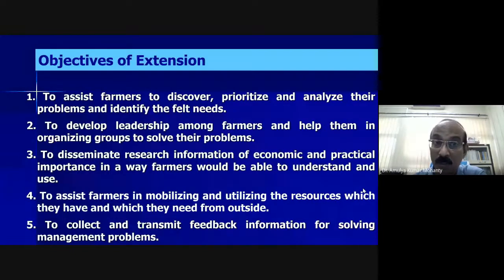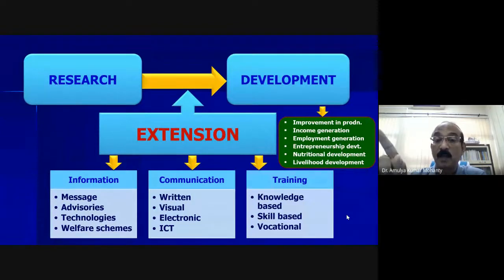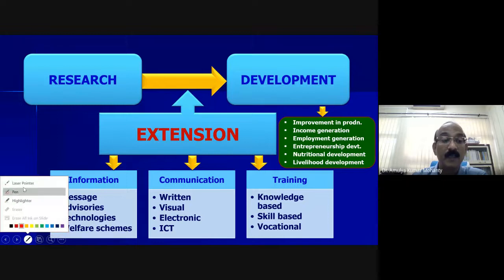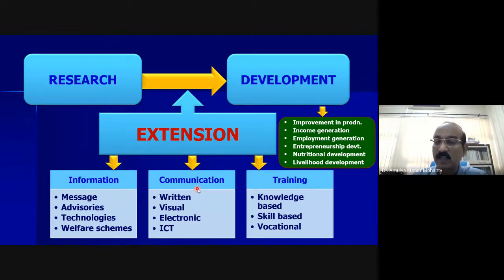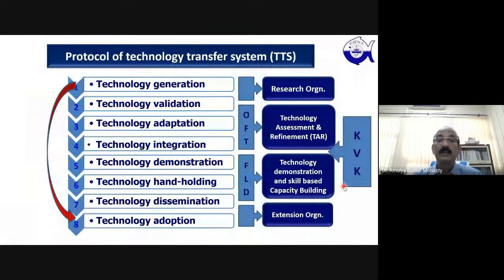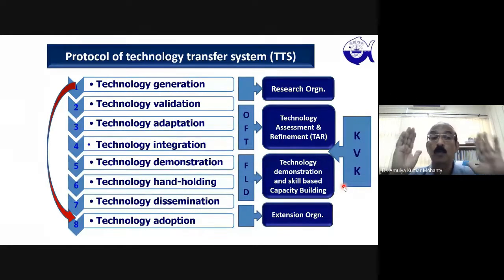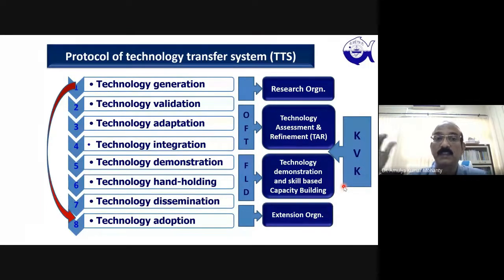Transmit feedback information for solving problems — not only management problems, but feedback regarding your technology, monitoring problems, management problems, field-based problems related to technology, economic aspects, financial aspects, and social aspects. Every kind of feedback information you should get, so that it can be modified. These are the clear-cut objectives of extension.